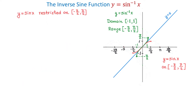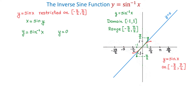To get the inverse sine function, we start with y equals sine of x restricted to the interval from negative pi over 2 to positive pi over 2. We then interchange x and y, giving us x equals sine of y. Solving for y, we have two notations: y equals inverse sine of x, written as sin⁻¹(x), and y equals arcsine of x. Both are widely used in many textbooks.